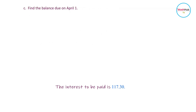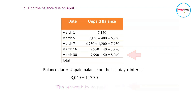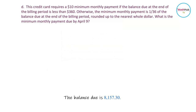Next is to find the balance due on April 1st. To find the balance due on April 1st, take the unpaid balance on the last day of the billing cycle plus the interest due on the next billing cycle. Therefore the balance due is 8,040 plus 117.30, which equals 8,157.30.